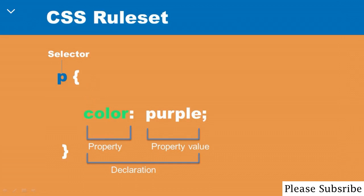You start with a selector — the HTML element you want to style. You can style many selectors; you can also style multiple selectors at a time by separating each one with a comma. But in this illustration, just to keep things simple, I'm using one selector. In this video, I explained what CSS means and also illustrated how a CSS rule set works. Thank you for watching.